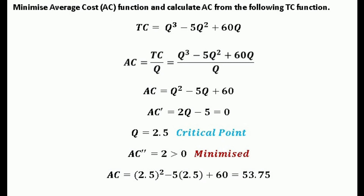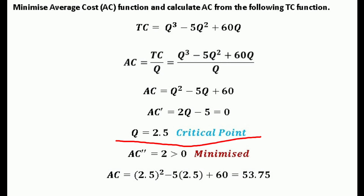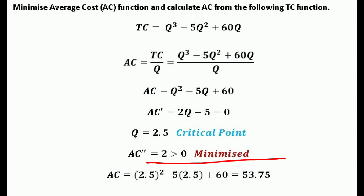Once we have the average cost function, we can minimize it. The first order condition: take the first derivative, AC' = 2q - 5 = 0, giving q = 2.5. This is the critical value. For the second order condition, the second derivative of the average cost function is 2, which is greater than 0. Therefore the average cost is minimized at q = 2.5.